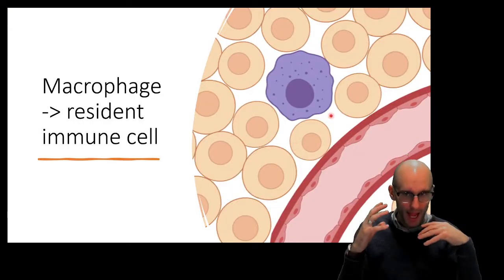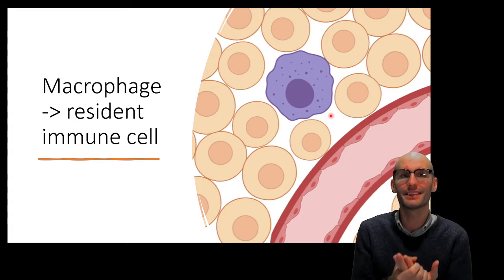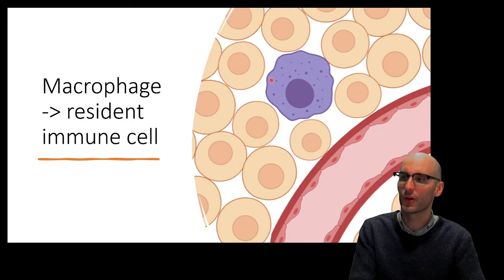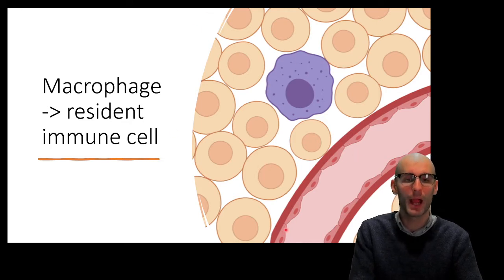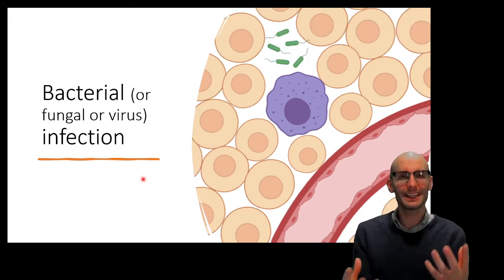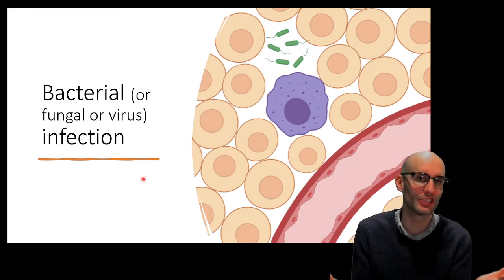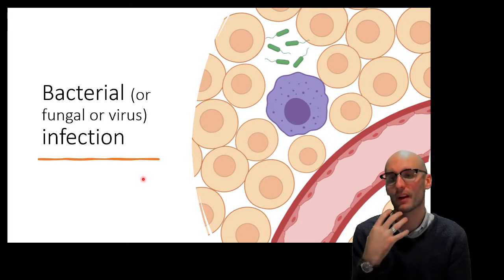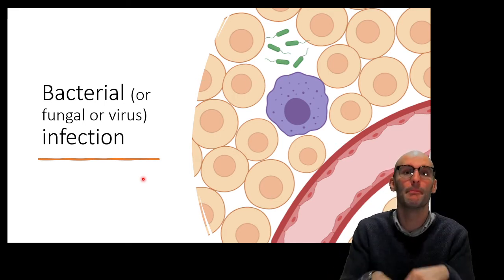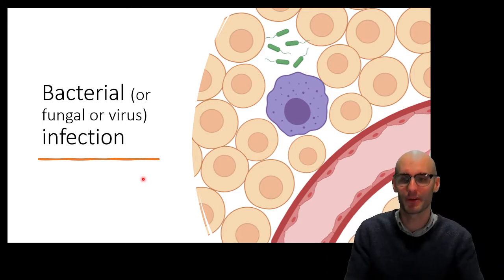Here we have a macrophage and a resident immune cell. It's important — most immune responses start with these resident immune cells that are living in tissue. We call tissue cells parenchymal cells. So here's our macrophage surrounded by parenchymal cells and we've got a blood vessel running through there. Now say we get an infection — and because the innate immune response does almost the exact same response no matter what pathogen it gets exposed to, what I'm about to say applies to bacterial, fungal, and viral infections. Once we get this pathogen in the extracellular milieu — the extracellular fluid — this is what's going to happen.